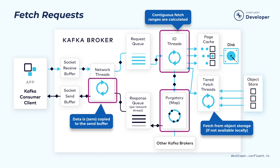Sometimes you may have a topic that has no new data. In this case, keep returning empty results to the consumer is wasteful and not efficient. So what a consumer can do is specify a minimum number of bytes it needs to wait for in the response, and the maximum amount of time it can afford to wait. If there's not enough data, similarly to the produce request, this fetch request will first be put into a purgatory structure to wait for enough bytes to be accumulated. Once enough bytes have been accumulated or enough time has passed, this pending fetch request will be taken out of purgatory and the corresponding fetch response will be generated and put into the response queue.